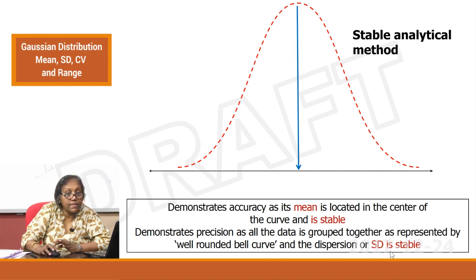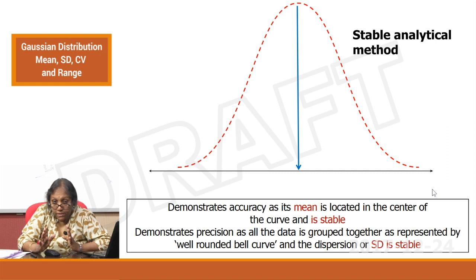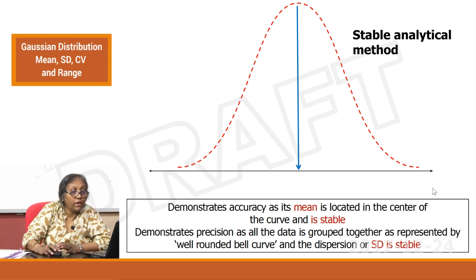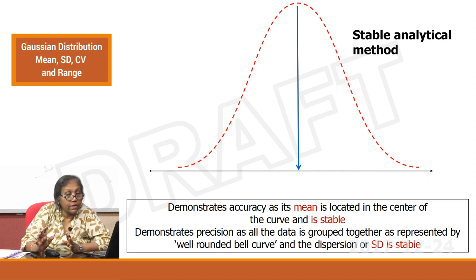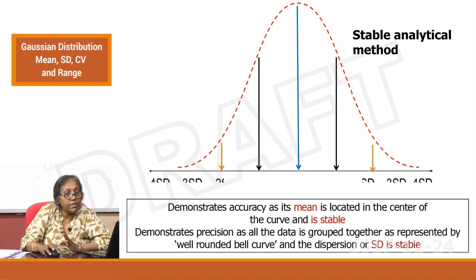The dispersion or SD is stable. Assuming this is a stable analytical system: your mean is stable and located in one place, your dispersion is controlled with a well-rounded bell curve, and the degree of dispersion is acceptable. This is your 1 SD, 2 SD, and 3 SD — your analytical system is stable.